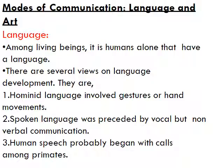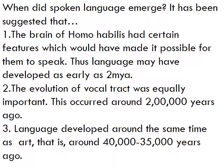Among living beings, it is humans alone that have language. There are several views on language development: hominid language involved gestures or hand movements; spoken language was preceded by vocal but non-verbal communication; human speech probably began with calls among primates. It has been suggested that the brain of Homo habilis had certain features which would have made speech possible, so language may have developed as early as 2 mya. The evolution of the vocal tract was equally important and occurred around 200,000 years ago.